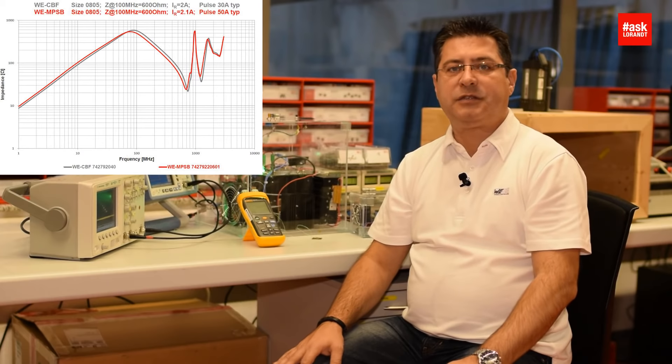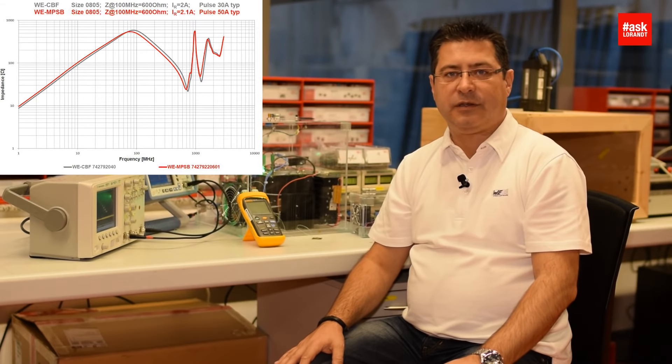And I will choose in the same size 0805, also the same impedance 600 ohm, and also a multilayer chip bead ferrite which is specified for this pulse. Like you can see in this graph, both have the same impedance.